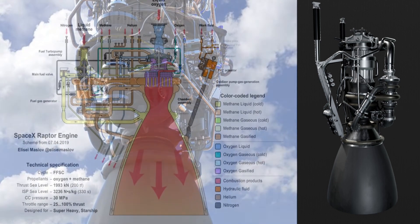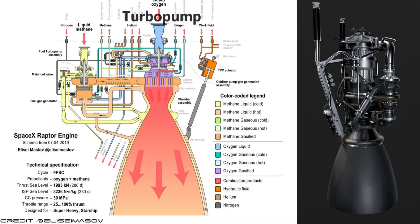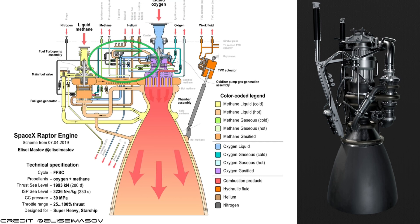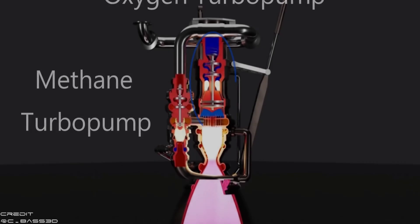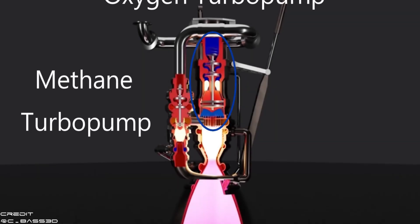The oxygen turbo pump sits right under the oxygen intake at the center of the Raptor engine. A small pipe seen here will bring some methane over from the methane supply and provide fuel to the turbo pump. The pre-burner will burn the fuel and a little of the oxygen, powering a turbine, causing it to spin and spinning the attached pump blades to pump the rest of the oxygen into the combustion chamber.